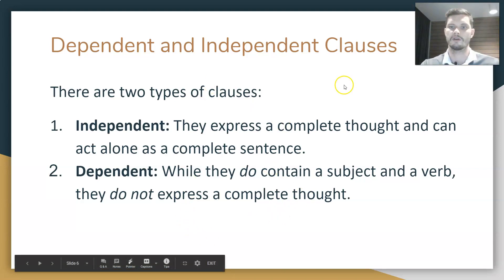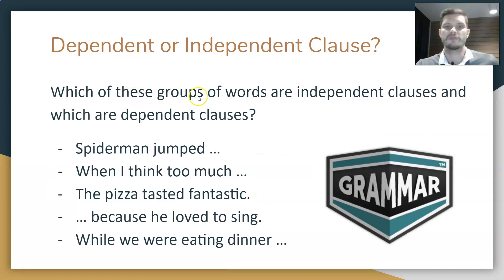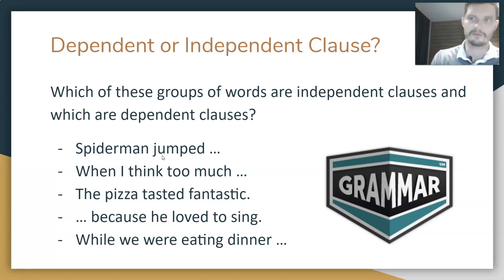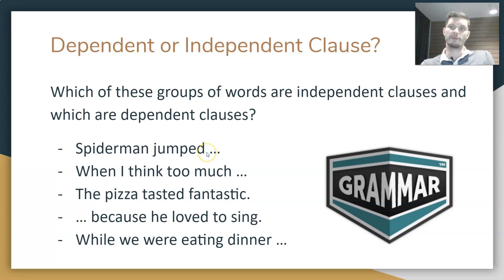Let's take a look at some examples. Which groups of words are independent clauses and which are dependent clauses? 'Spider-Man jumped.' We have a verb — 'jumped' — and a subject — 'Spider-Man.' Is that a complete thought? Actually, it is. We could put a period right here: 'Spider-Man jumped.' That would be a complete sentence. It expresses a complete thought.